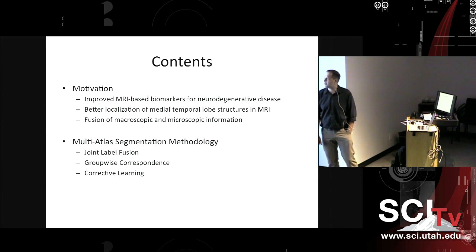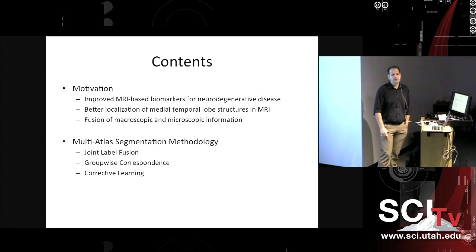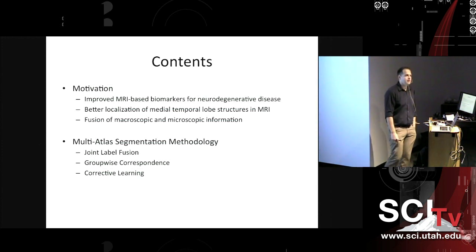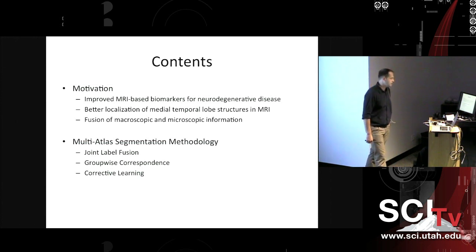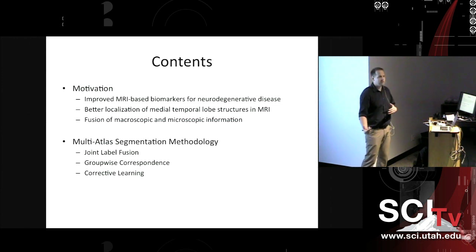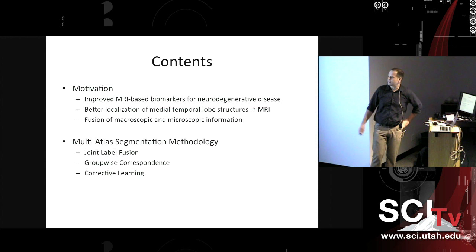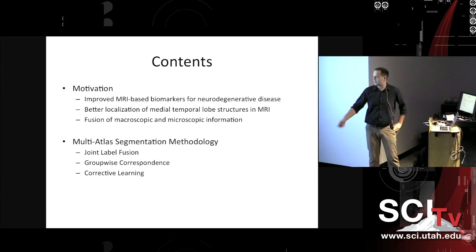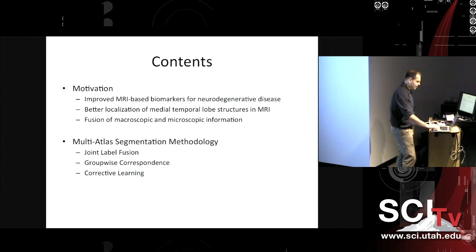I broke up the presentation today into two halves. One is kind of an extended motivation, which gives a very brief overview of our work on biomarkers for neurodegenerative disease and accurate, careful modeling of anatomy and the hippocampus. But the main focus will be on a little bit more methodological stuff, which revolves around different ways of using example images with segmentations to segment new images — label fusion, extension of label fusion to correspondence finding, and post-processing of segmentations with machine learning algorithms.